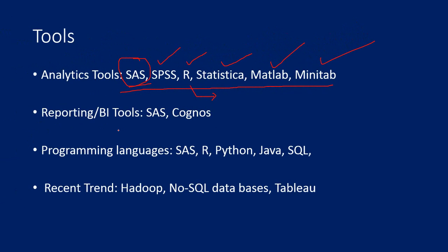There are different types of analytics that is done. The analytical tools I mentioned just now are basically used for statistical modeling. But there are other types of analytics that is also done, like reporting and business intelligence.